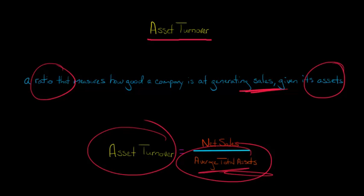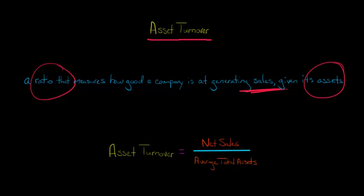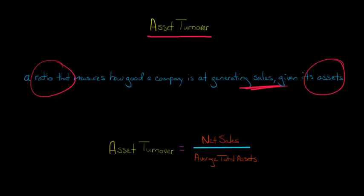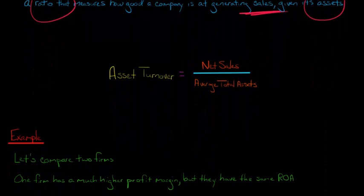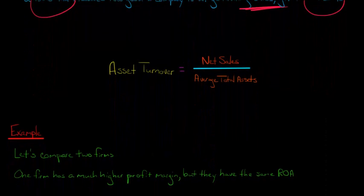You would get the average total assets from the prior two years of balance sheets. Let me show you an example with a couple of firms, and I'll show you how to calculate the asset turnover ratio and then how to interpret it.